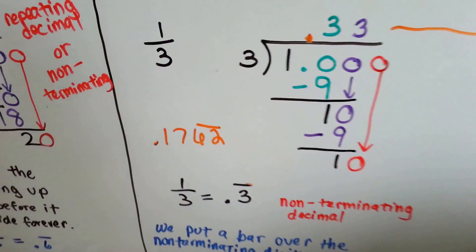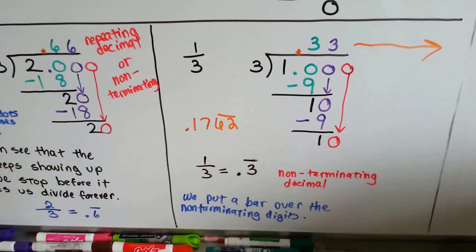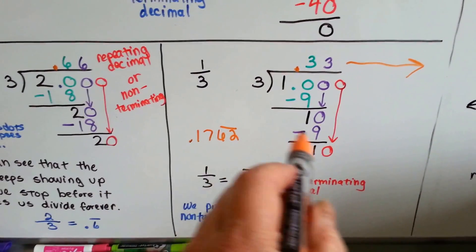So, we could have five repeating numbers, and have to put the bar over all five of them.